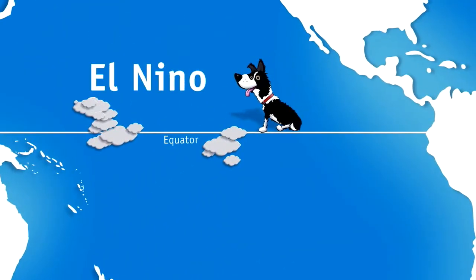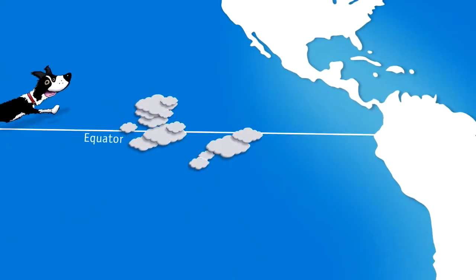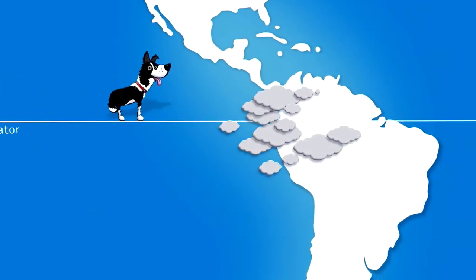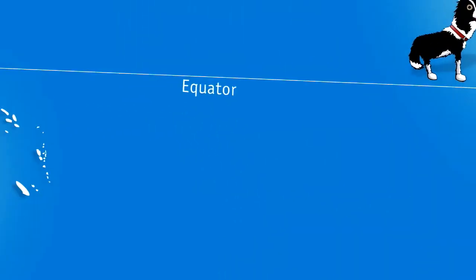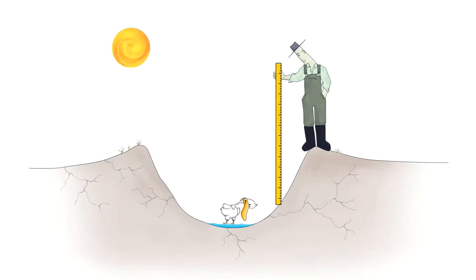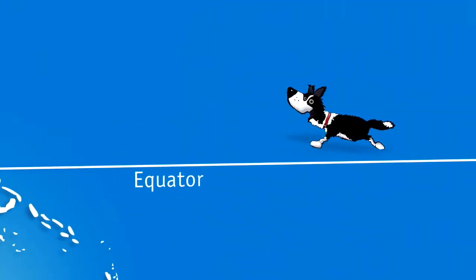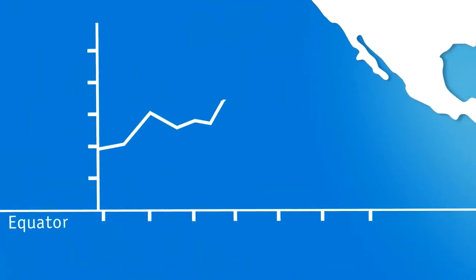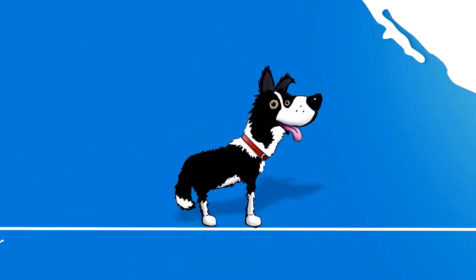During El Niño, Enso changes his mind and drives warm moist air towards South America instead. El Niño years have often resulted in drier winter and spring periods for Victoria. Each year, climatologists follow Enso's behaviour, providing us with a potential rainfall outlook for Victoria. So Enso is definitely an important dog to keep an eye on.